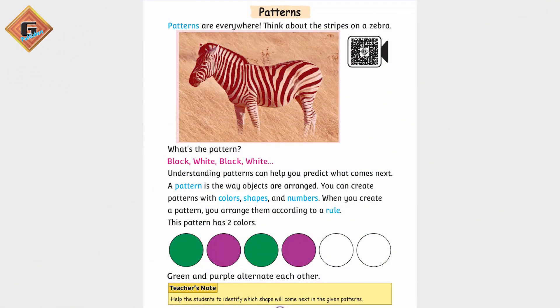This is a real-time example. This is a zebra pattern. If we look at this picture, this is black, white, black, white stripes. This is a pattern.